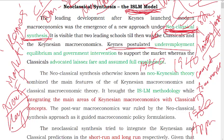It was in the 1940s and 1970s. In the 1940s, the ISL model is a branch of microeconomics. The ISL model is a new classical synthesis. We are going to learn about the ISL model.